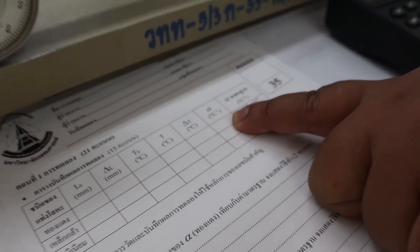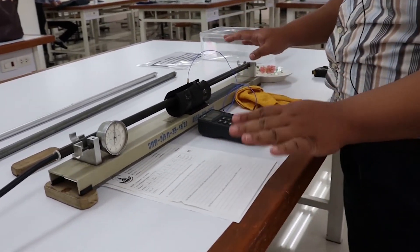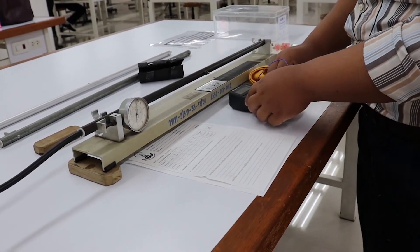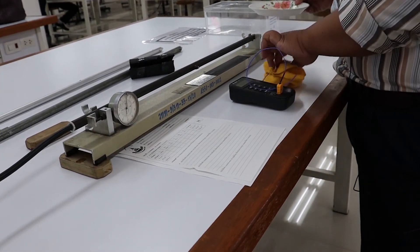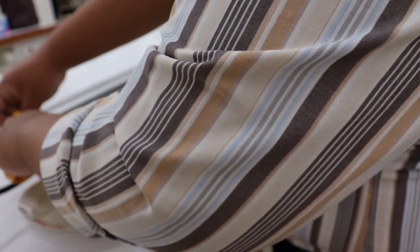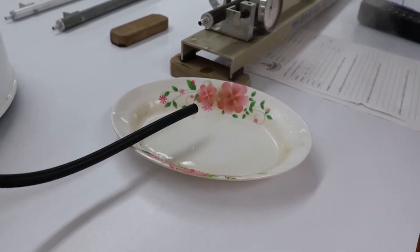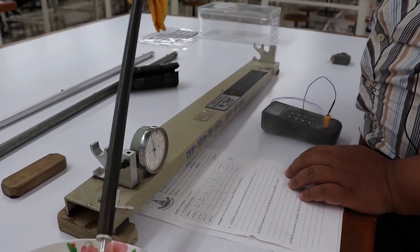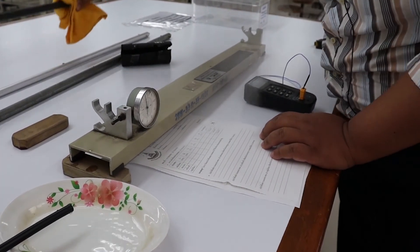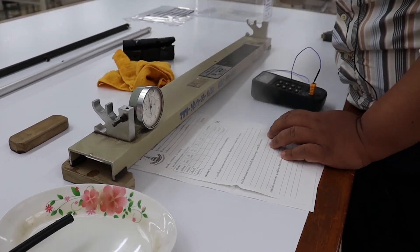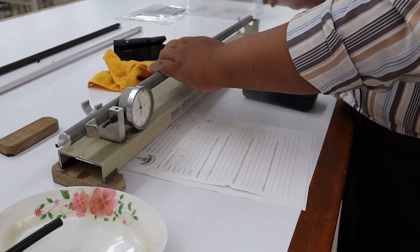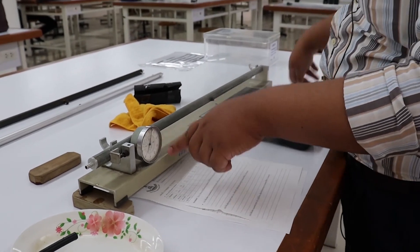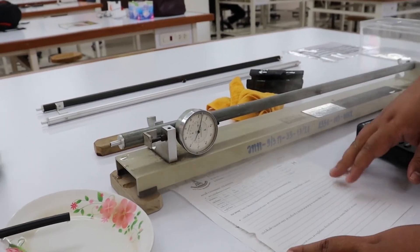After finishing the measurement, change the metal rod by unlocking the sensor. Move the dish to catch the steam. Take off the rubber tube. Take off the metal rod. Rinse the hot water. And get the new metal rod to lock with the base and dial gauge. Do the same process as before. Do like this for three types of metal.